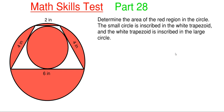So this will be our 28th part in the series, and what we have going on here is that we have to determine the area of the red region shown in the circle. We are told that the smaller circle is inscribed within the white trapezoid, the white trapezoid is inscribed within the larger circle, and we are also given the dimensions of the white trapezoid.